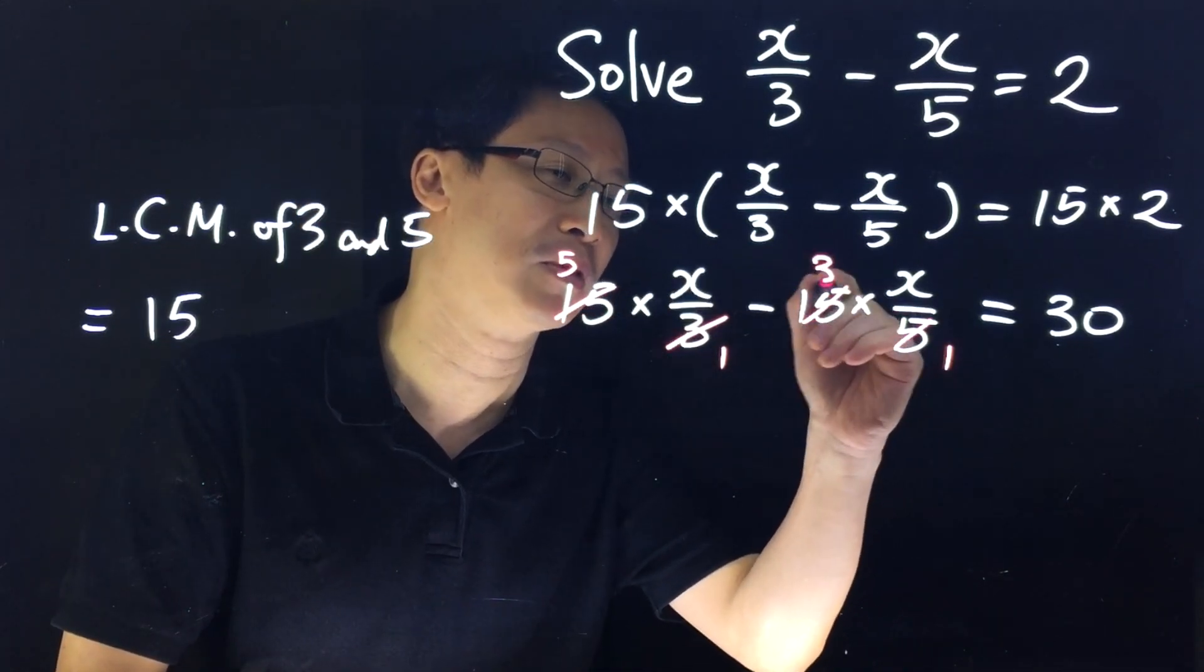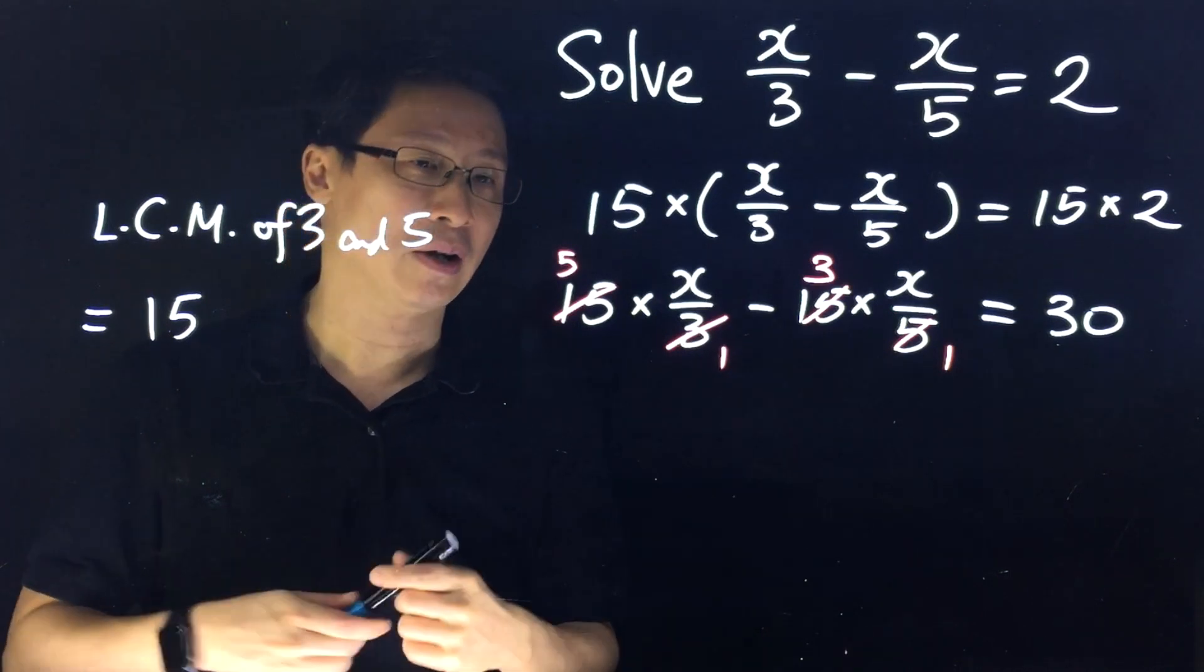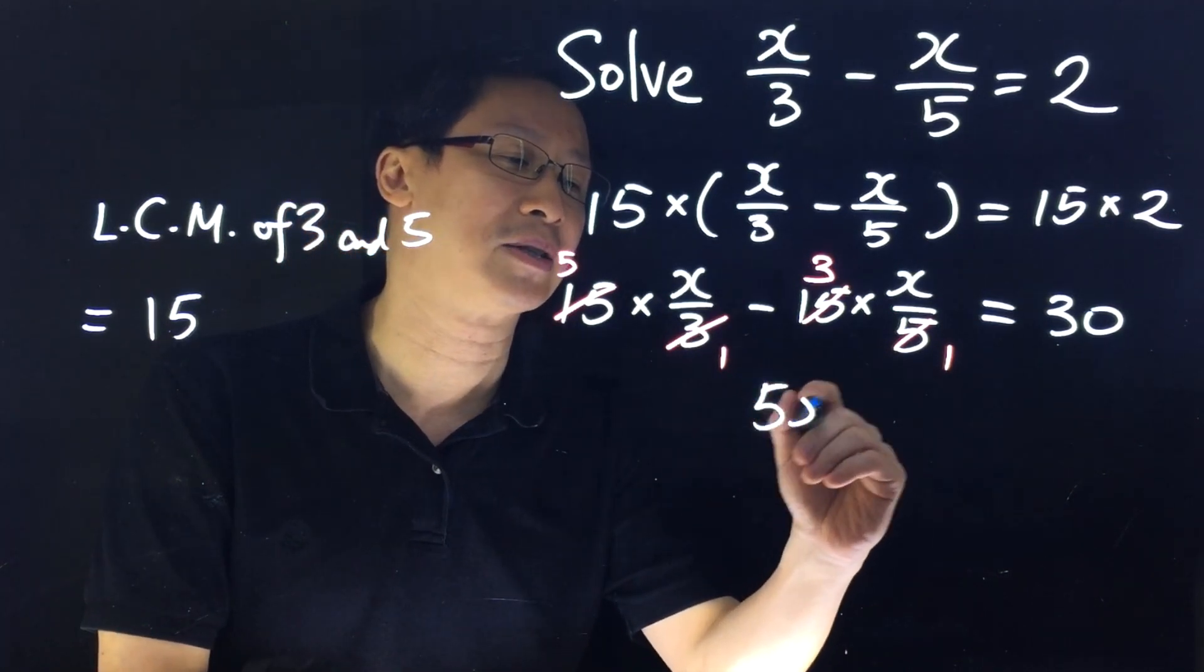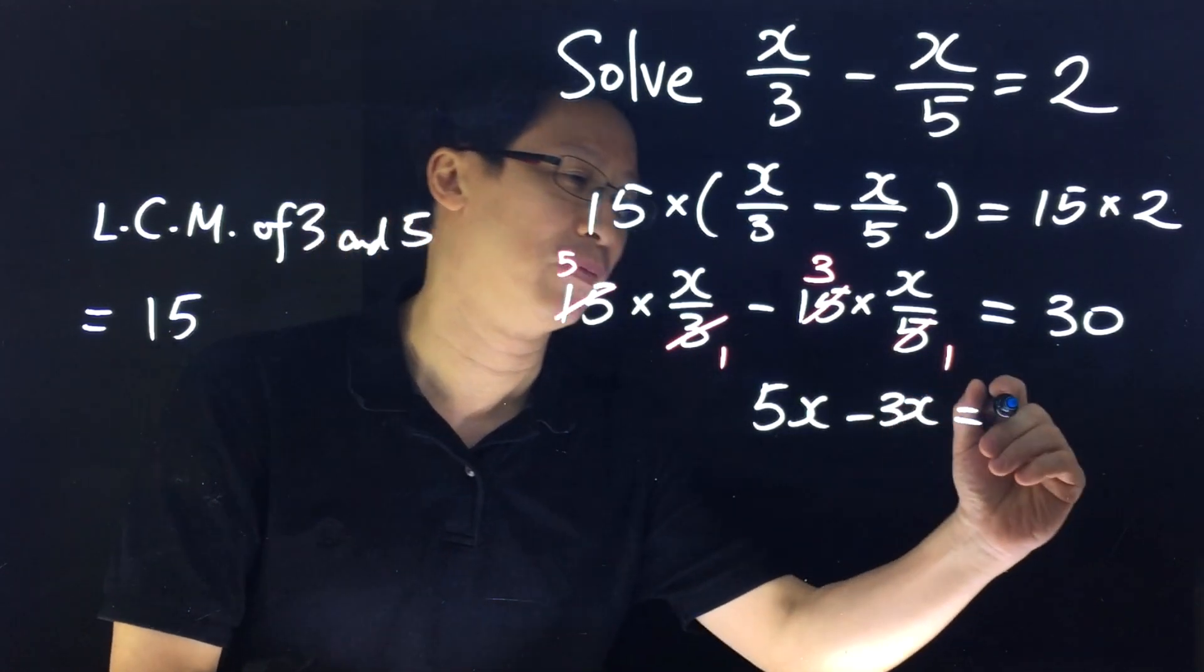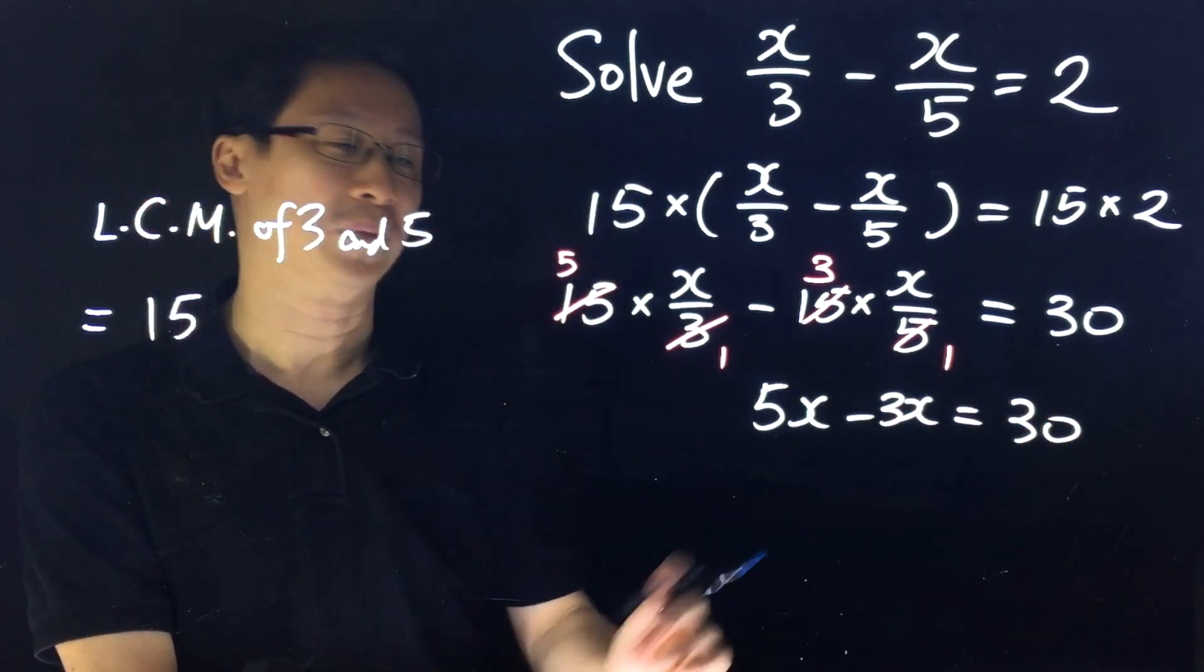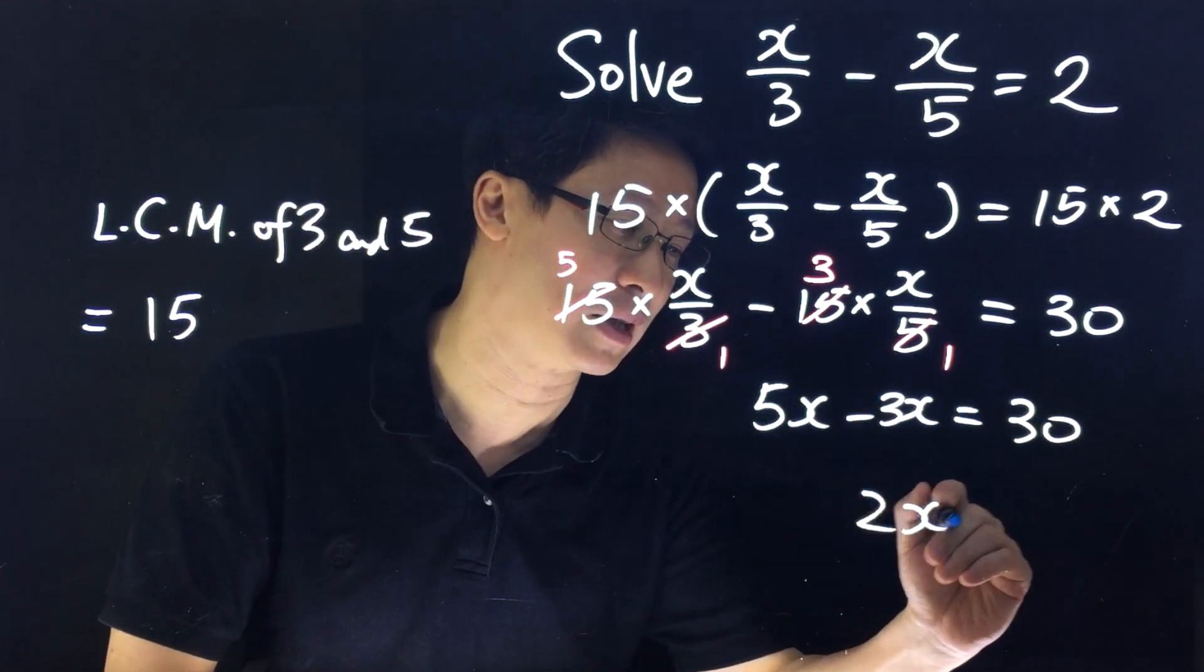After cancellation, on the left hand side we have 5x - 3x, which gives us 2x.